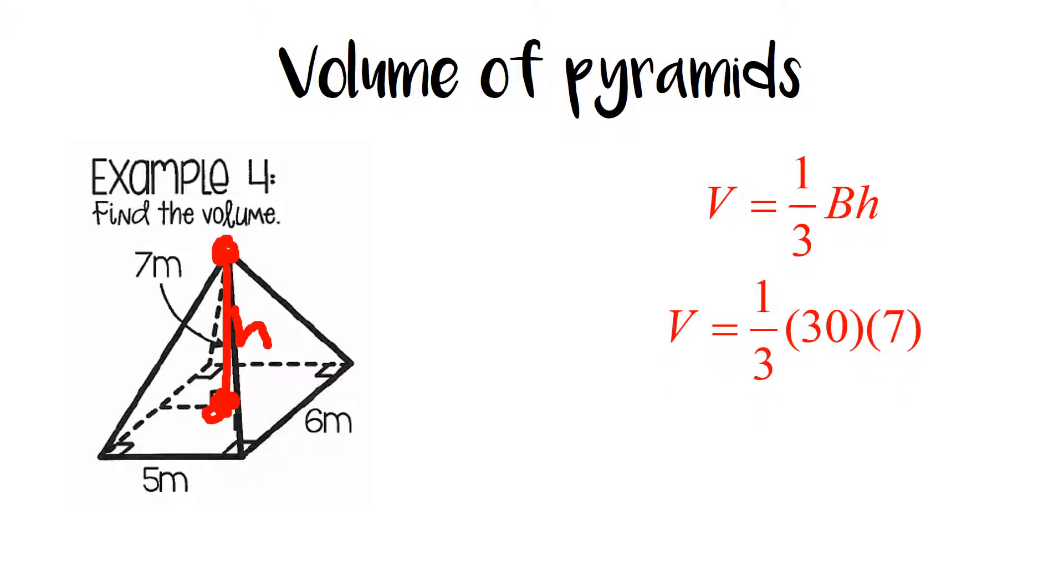So in our case we have a base that's a rectangle. So all we have to do is take one-third times the area of the base would be 5 times 6, which is 30, times that height of the entire pyramid, which is 7. And so that would give us a final answer of 70 meters cubed. Make sure you label your meters correctly. And since we're in volume or 3D, it has a cube on it for our units.